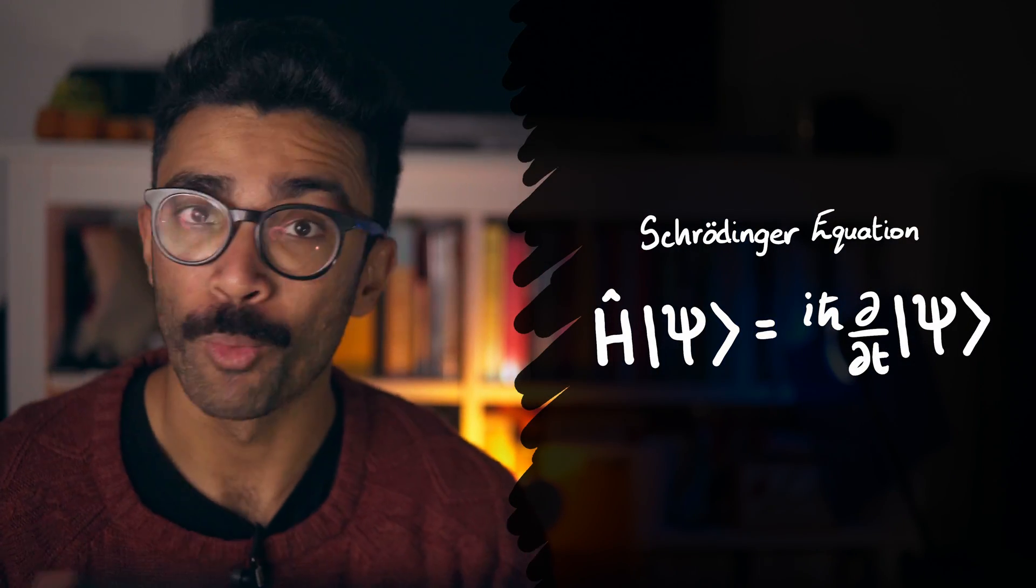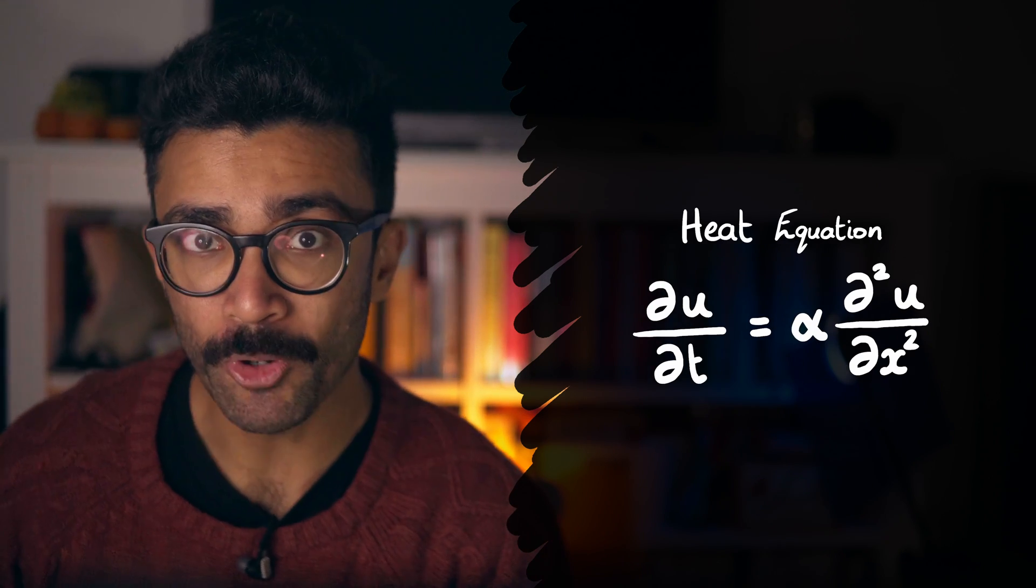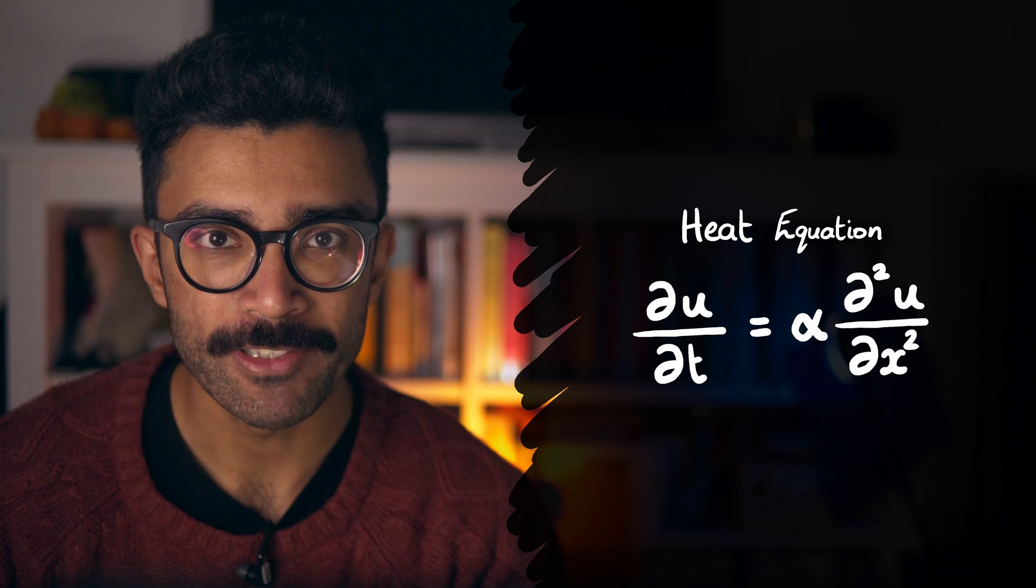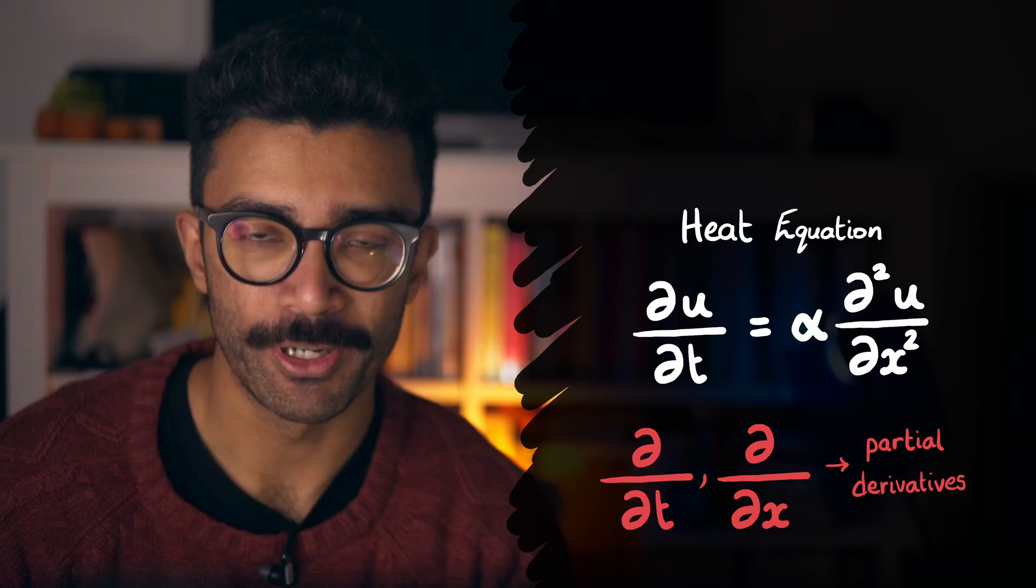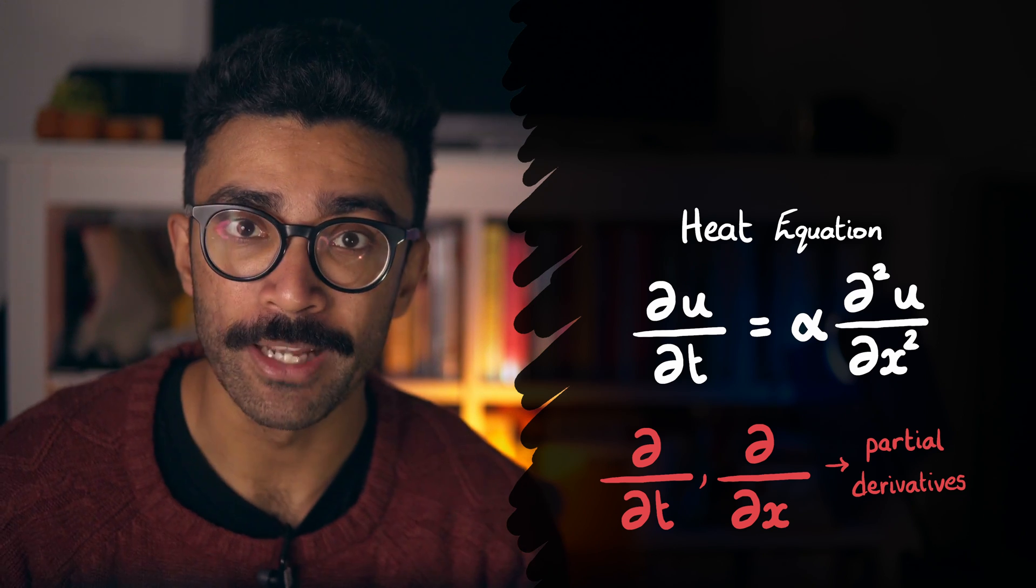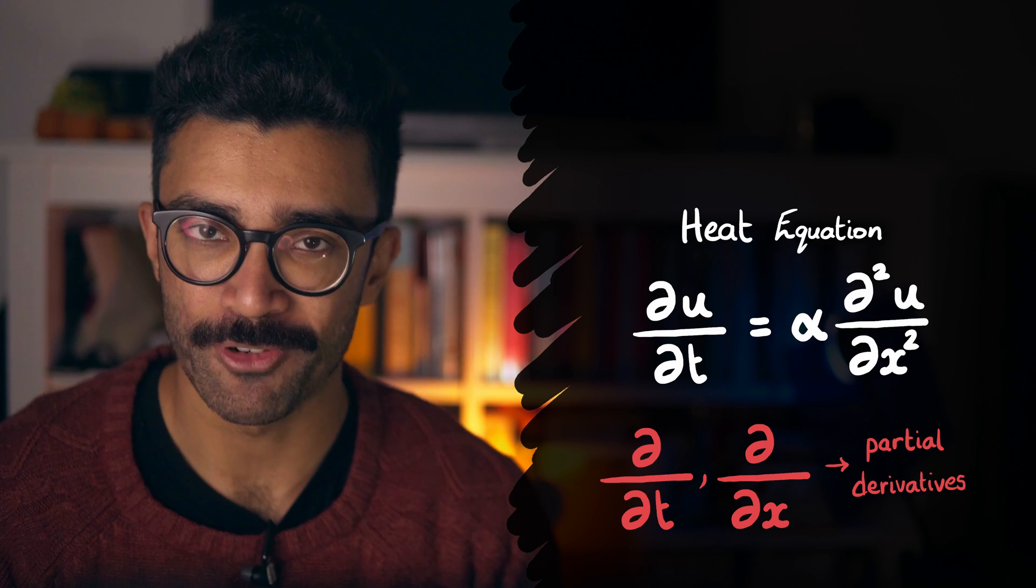As seen in the Schrödinger equation, wave equation, Euler-Lagrange equation, heat equation and many more, the idea that I'm talking about is that of partial derivatives. If we understand partial derivatives, then we're well on our way to decoding what each of these equations actually means and what they're trying to tell us.